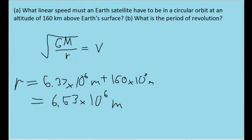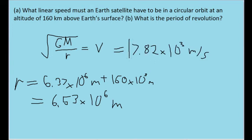We can plug that in for r, and also plug in the values for the constant big G and the mass of the Earth — both of which can be looked up fairly easily. We find that the linear speed of the satellite's orbit is equal to about 7.82 times 10 to the third power meters per second.